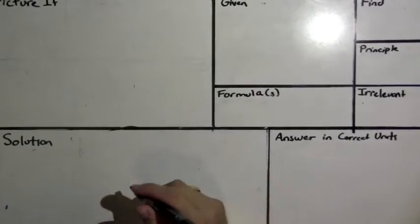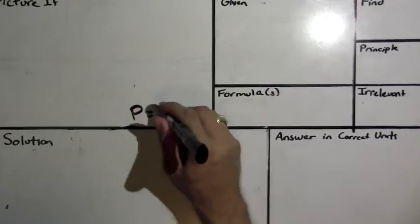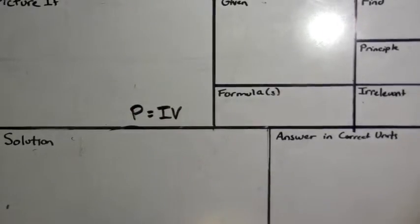Okay, for this one we have, we're sketching the relationship between current and resistance given a constant electric power. So we have P equals IV is our formula for electric power.